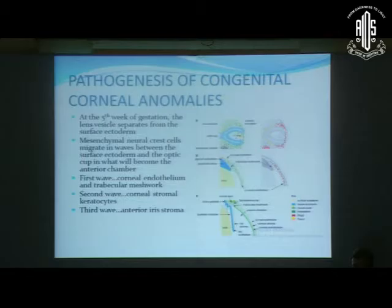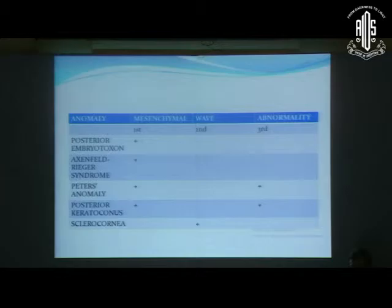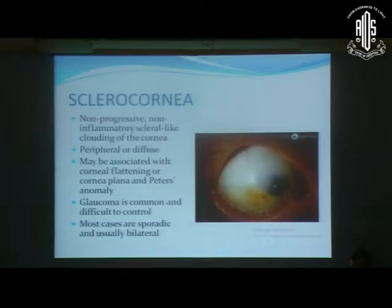A little embryology helps us understand. At the fifth week of gestation, the lens vesicle separates from the surface ectoderm, and mesenchymal neural crest cells migrate in three waves between the surface ectoderm and the optic cup. The first wave forms the corneal endothelium and trabecular meshwork; the second forms corneal stromal keratocytes; and the third forms the anterior iris stroma. Abnormalities in these three waves can give rise to developmental anomalies.